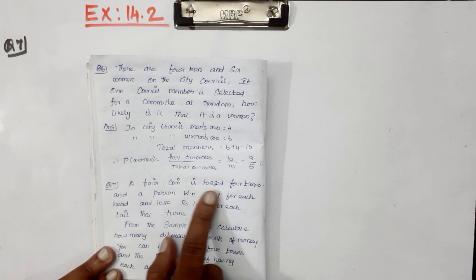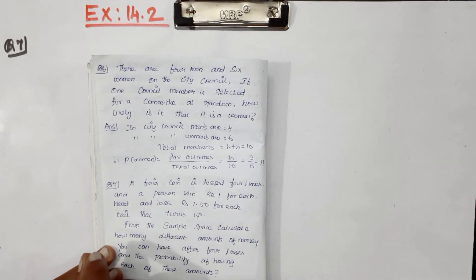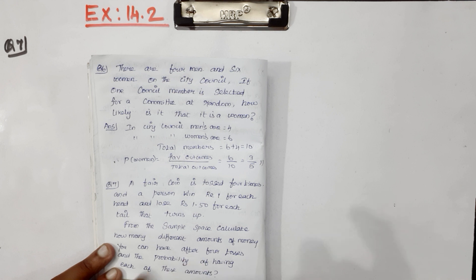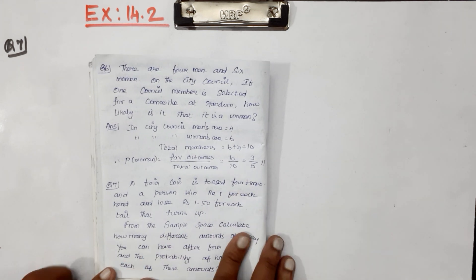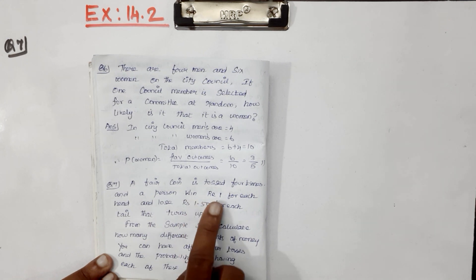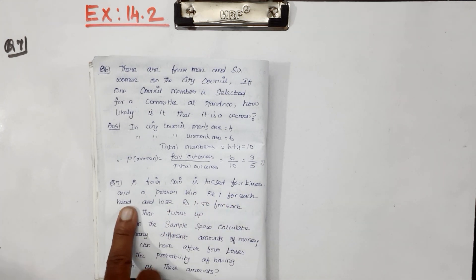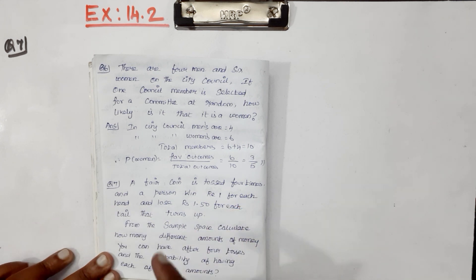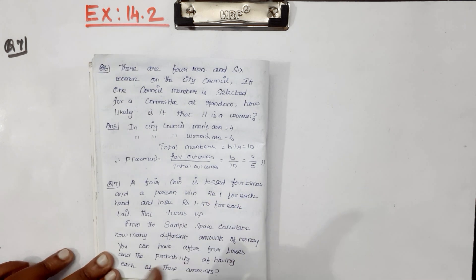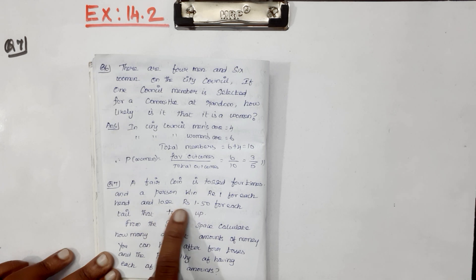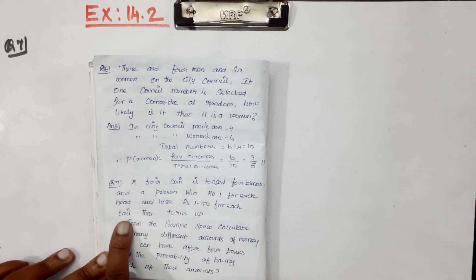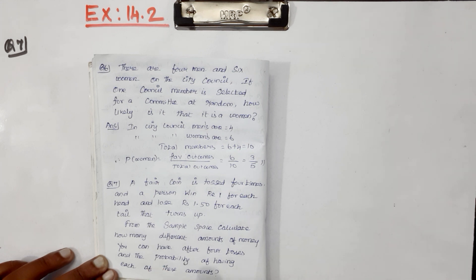A fair coin is tossed 4 times. What is a fair coin? One coin — how many sides does it have? Head and tail. How many times is it tossed? Four times. A person wins Rs. 1 for each head, and loses Rs. 1.50 for each tail.